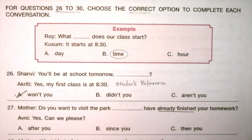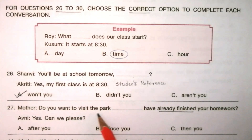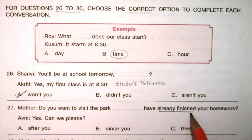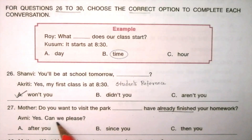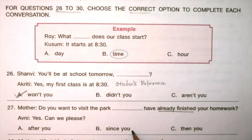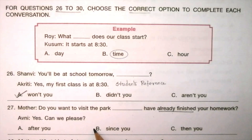Question 27 — Mother: Do you want to visit the park, ___ you have already finished your homework? Anvi: Yes, can we please? Options: after you, since you, then you. The answer is B: since you. Do you want to visit the park since you have already finished your homework?